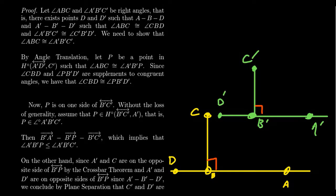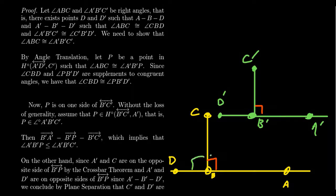By assumption, because these are right angles, angle ABC is congruent to its supplement CBD, and angle A'B'C' is congruent to its supplement C'B'D'. So we know that these angles are congruent to each other, and these angles are congruent to each other. Our goal is to prove that angle ABC and angle A'B'C' are in fact congruent to each other.